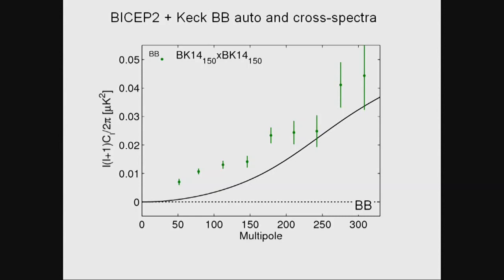BICEP2 saw a lot of B-mode polarization — you've heard about that. We combined BICEP2 with Keck data taken through end of 2014 and turned that into a power spectrum — amplitude as a function of wavelength. The prediction from gravitational lensing, which comes from second-order scalar perturbation where scalar perturbations lensed by large-scale structure can generate B-mode polarization, is well-known. And this is what BICEP2 and Keck measured at 150 GHz — way beyond what the lensing predicted, so people got excited.